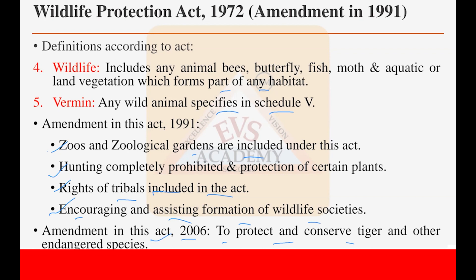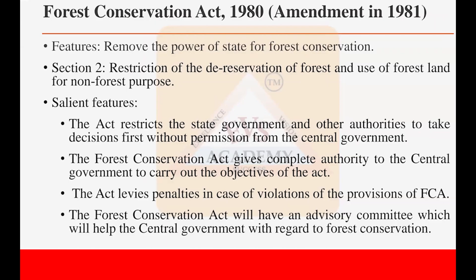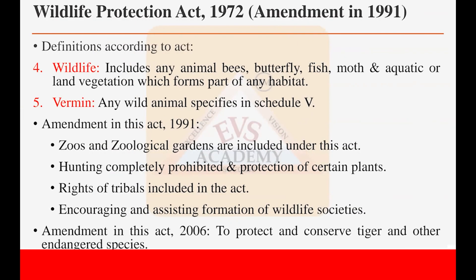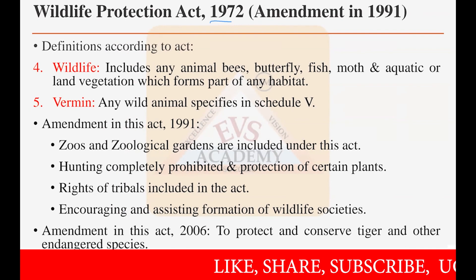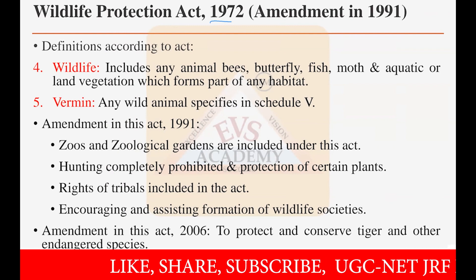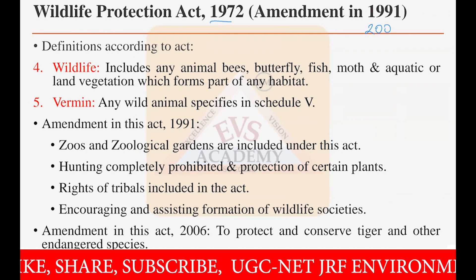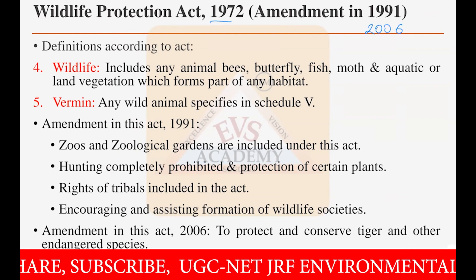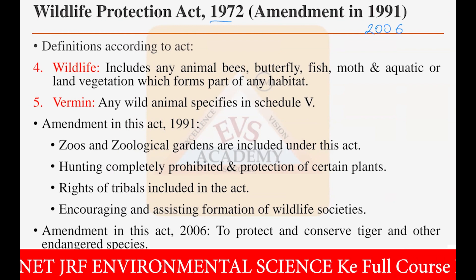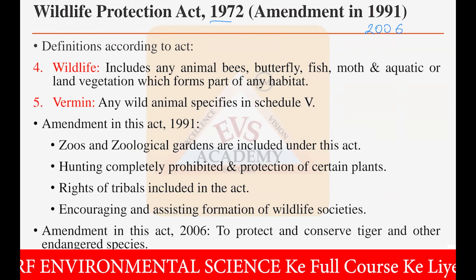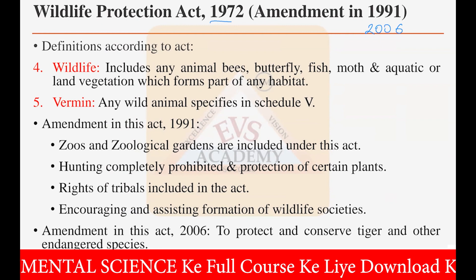Another amendment was done in the year 2006, a minor amendment to protect tigers and other endangered species, with a few more provisions added. In summary, the Wildlife Protection Act was established in 1972, with major amendments in 1991 and a minor amendment for tiger preservation in 2006.